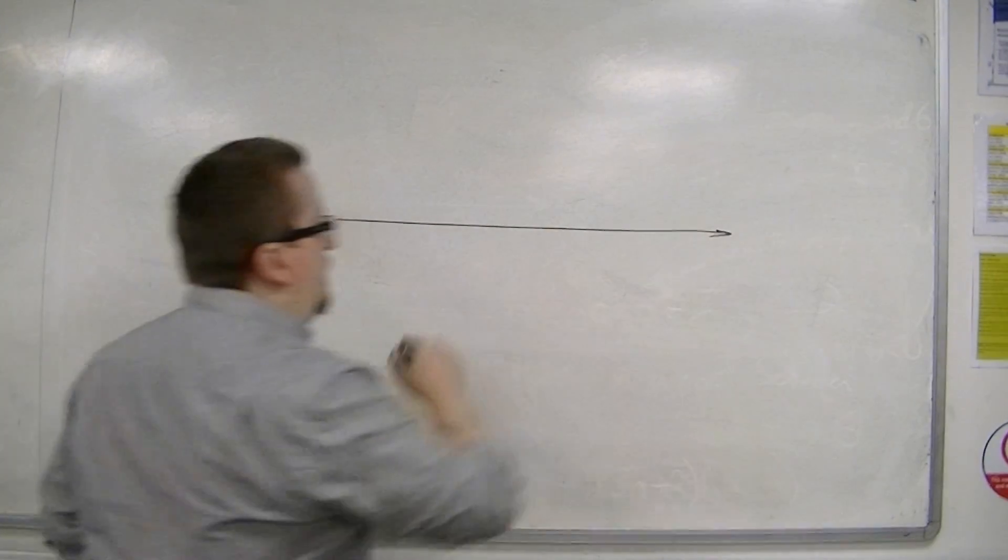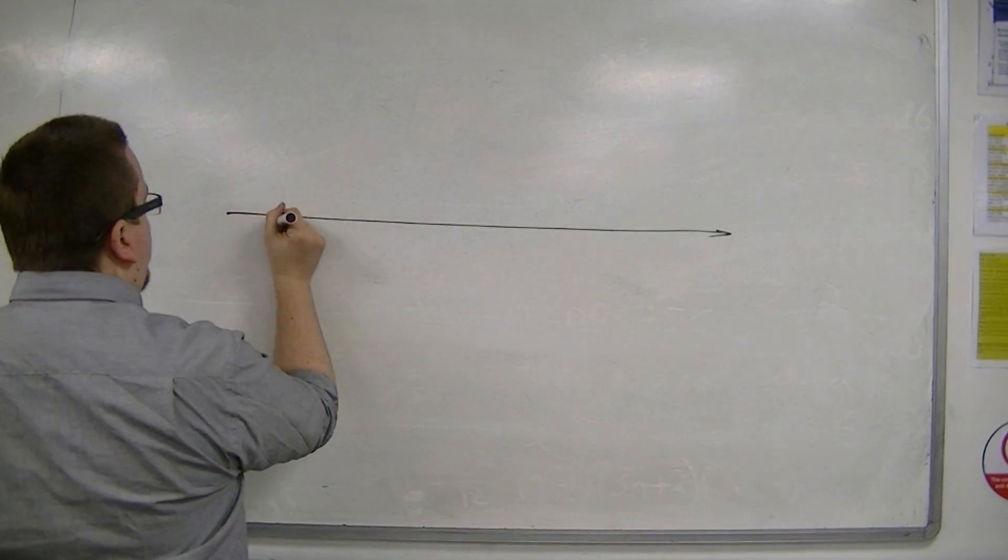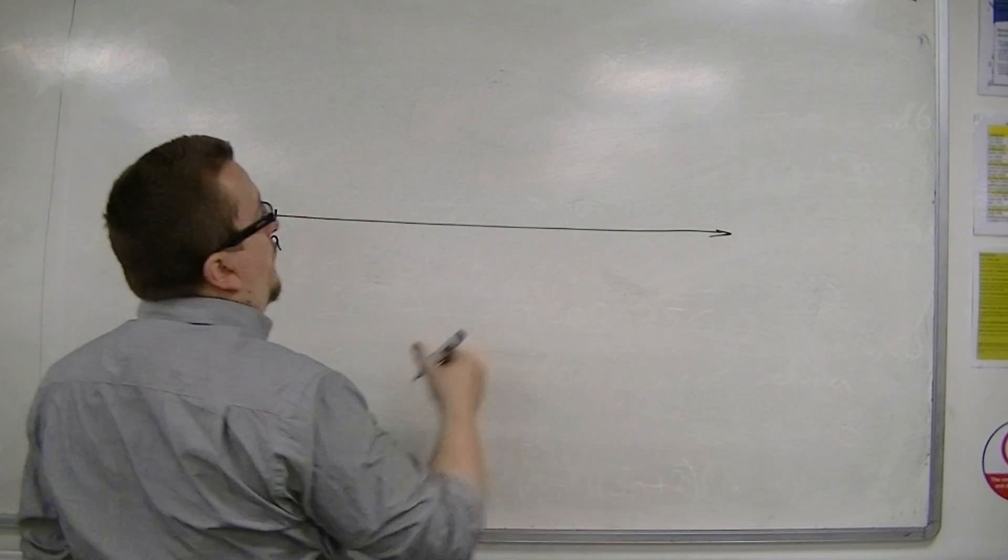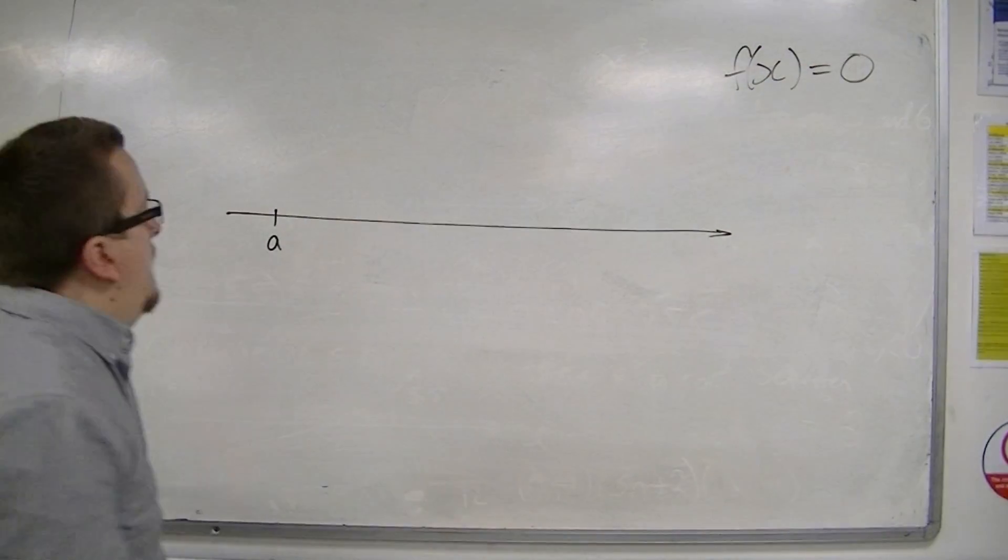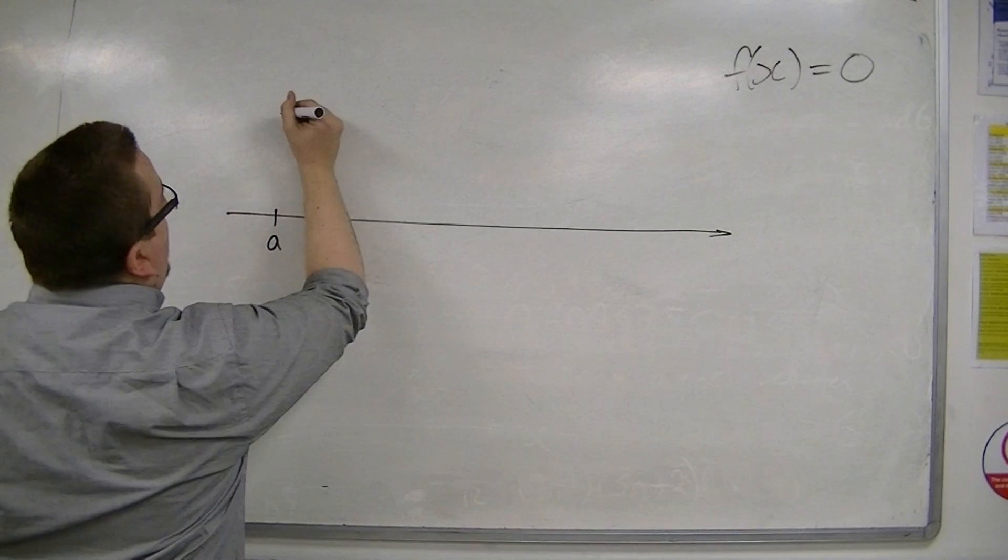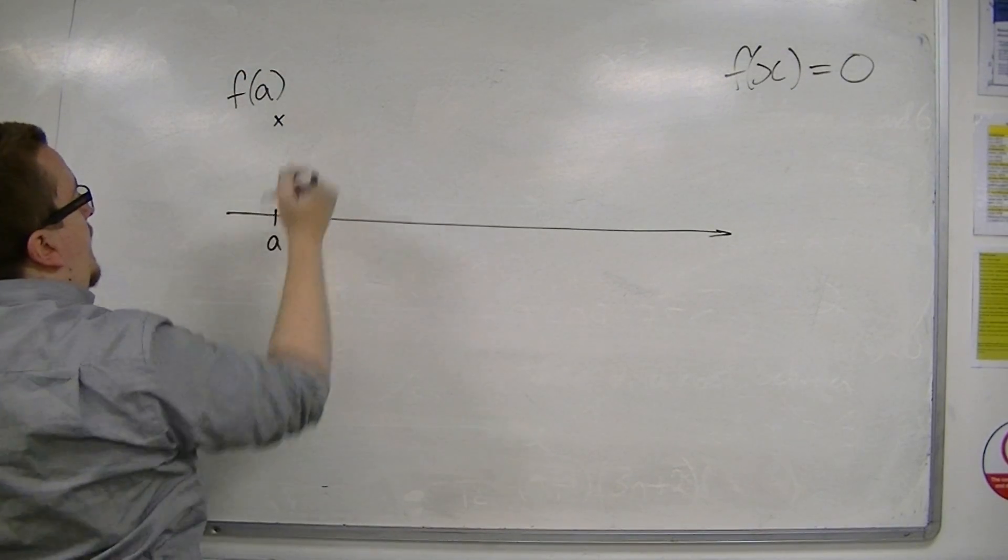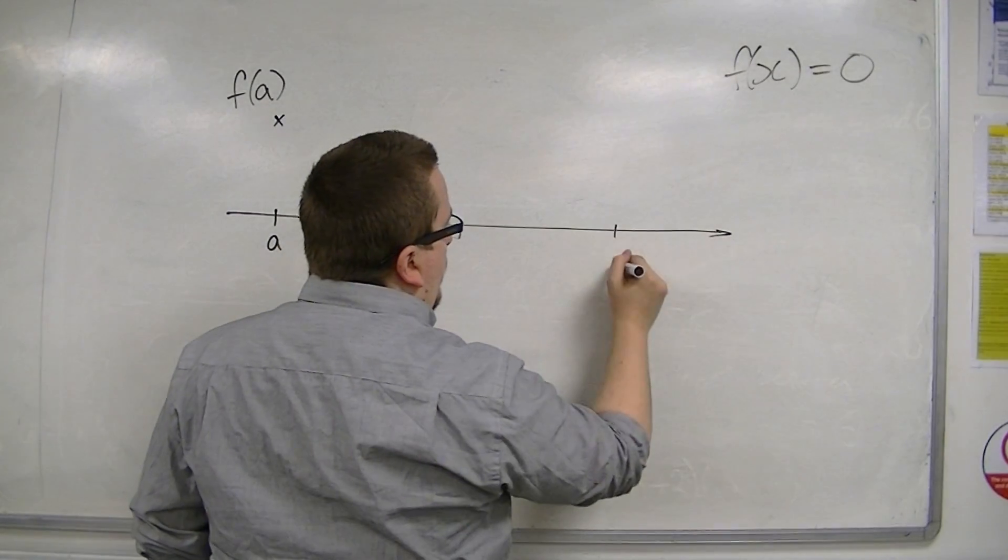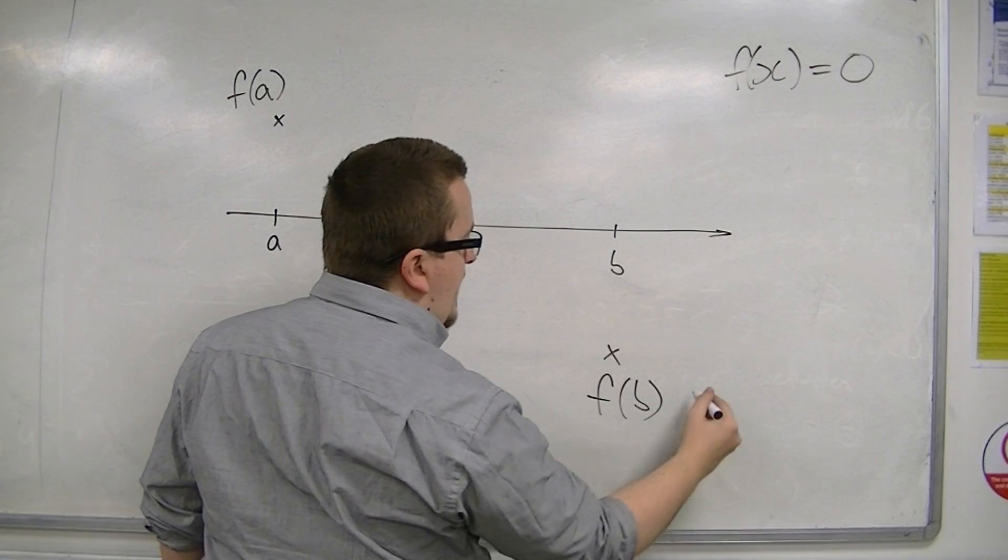What we've shown is that if, for example, I'm trying to solve f of x equals 0, and I find that f of a is positive, so this is f of a, and then f of b is negative,